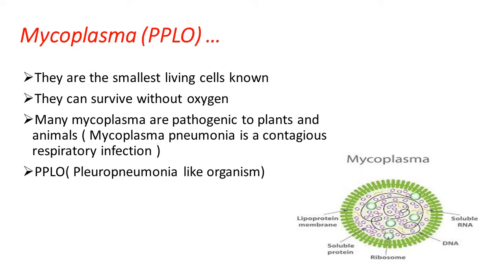Mycoplasma can survive without oxygen, so they are an example of anaerobic organisms. All anaerobic organisms can survive without oxygen — they do not need oxygen to survive in their habitat. Being anaerobic organisms, they cause a number of diseases in plants and animals.